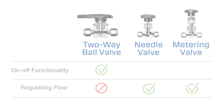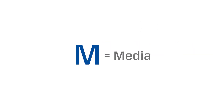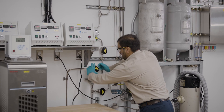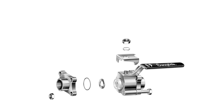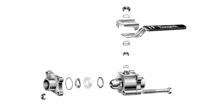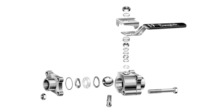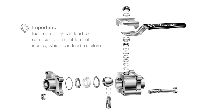Once you know what you need your valve to do, think about your system media. Be sure your fluid is compatible with the materials that make up your valve bodies, seats, stem tips, and other soft materials. Incompatibility can lead to corrosion or embrittlement issues, which can lead to failure.